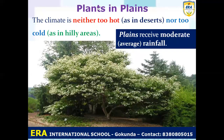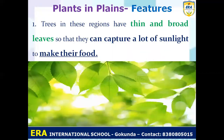The fourth type is plants in plains. Plains are neither too hot nor too cold. Plants in plains receive average rainfall — not too much and not too little. The first feature is that trees in plains have thin and broad leaves, which can capture a lot of sunlight so the plants can make their food through the process called photosynthesis.